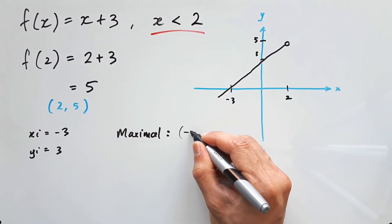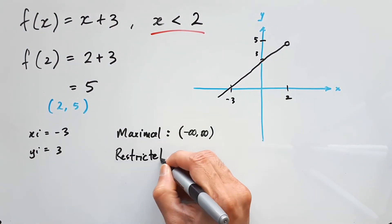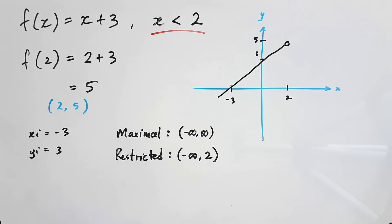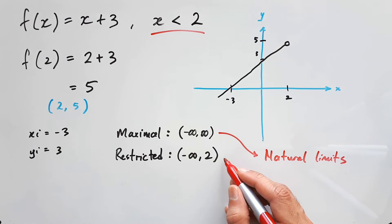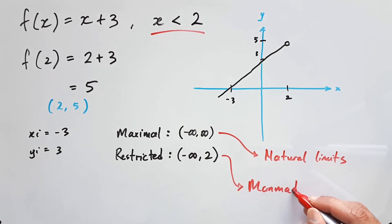So while the maximal domain is just everything, the restricted domain would be negative infinity up to 2, not including. So maximal domains are created using natural limits. Restricted domains, however, are created using man-made limits, and they're usually quite obvious because they're given in the function itself.